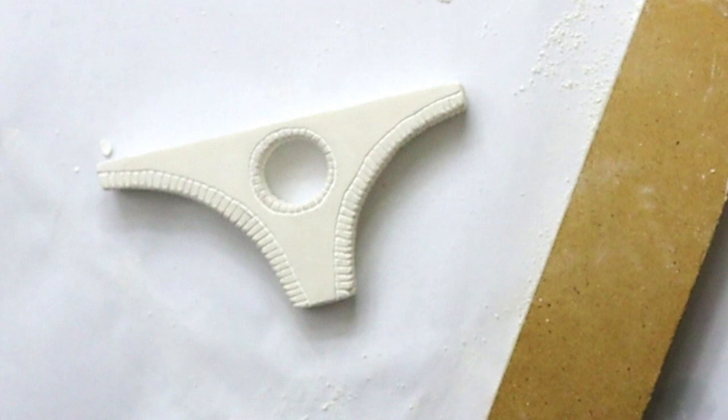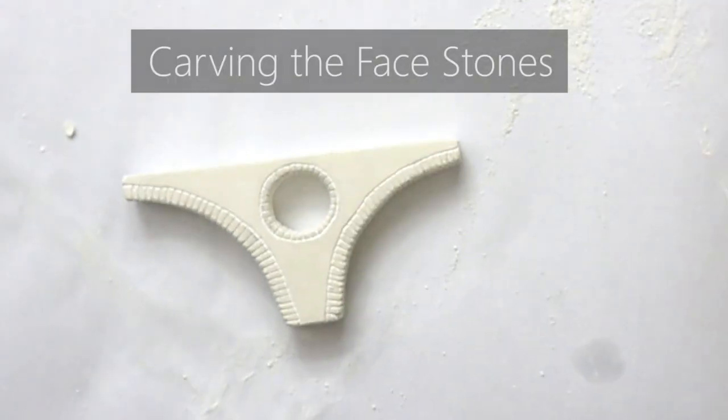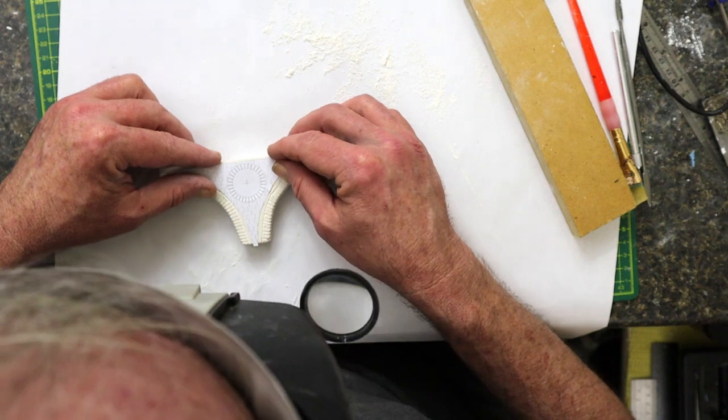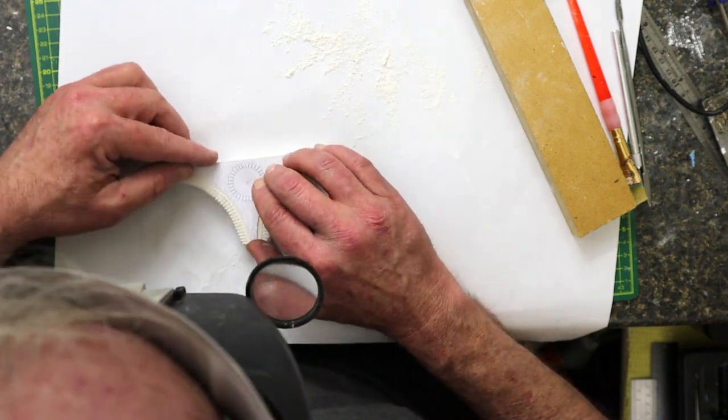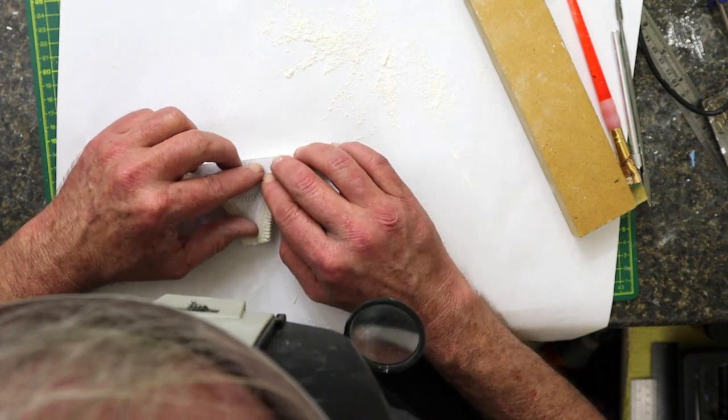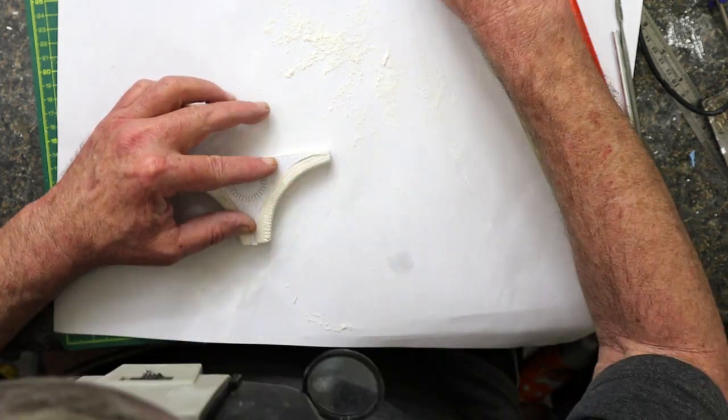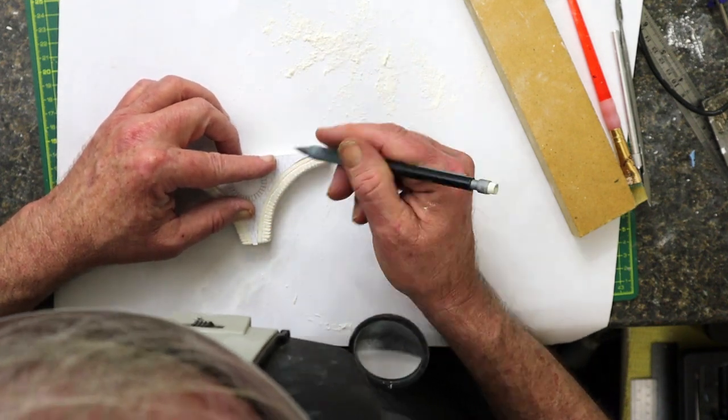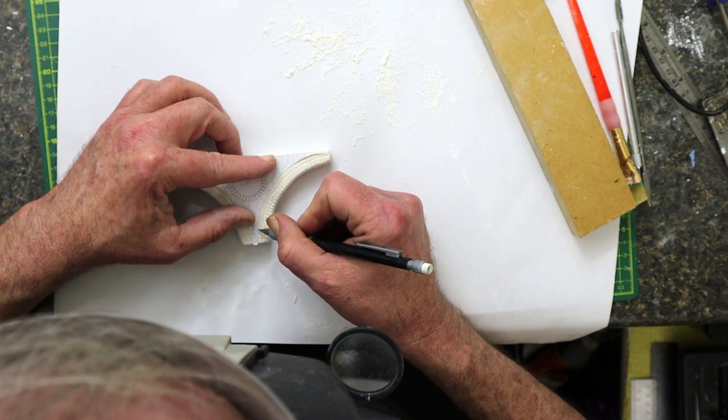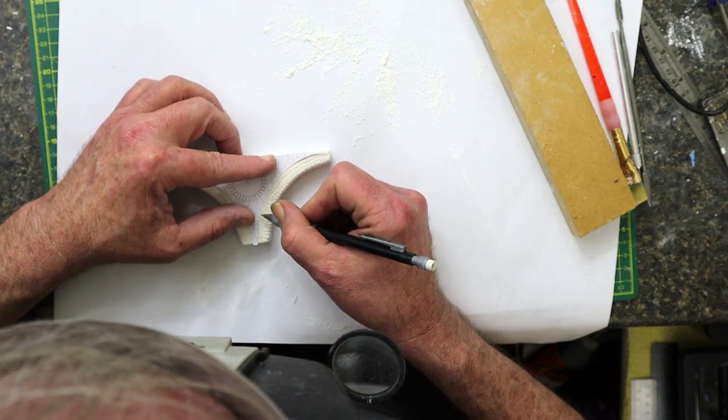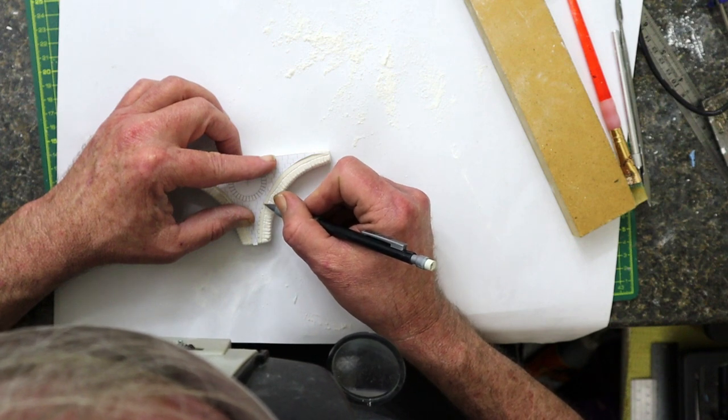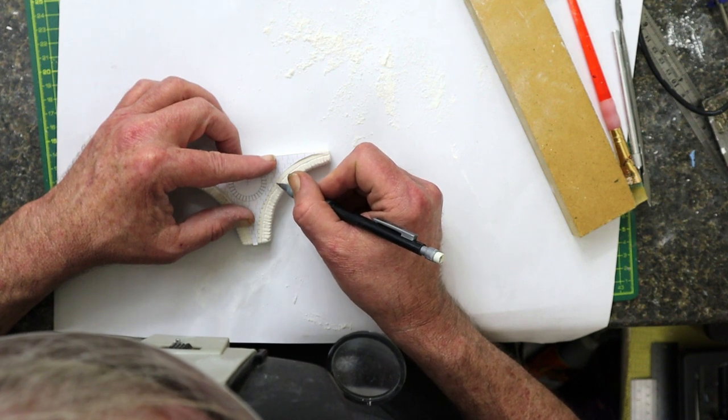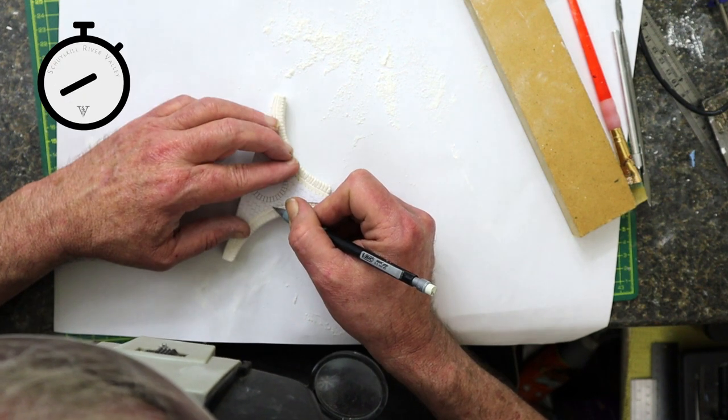And here's the spandrel at this stage. And now it's on to carving the face stones. I'll use one of the templates I made earlier to mark the horizontal joints between the stones.